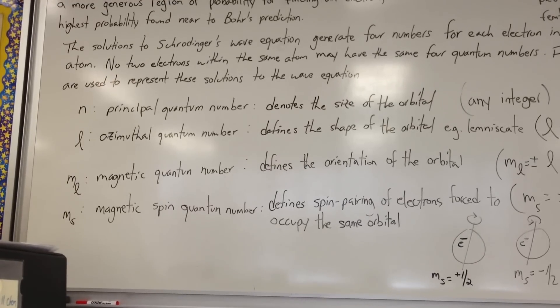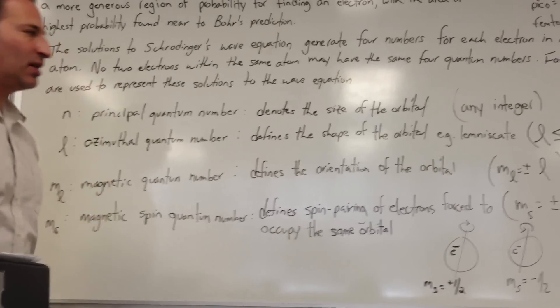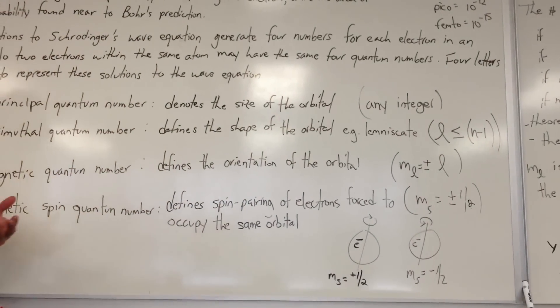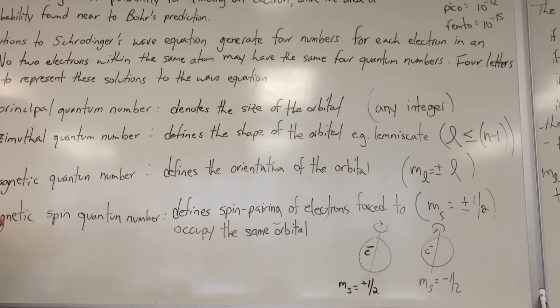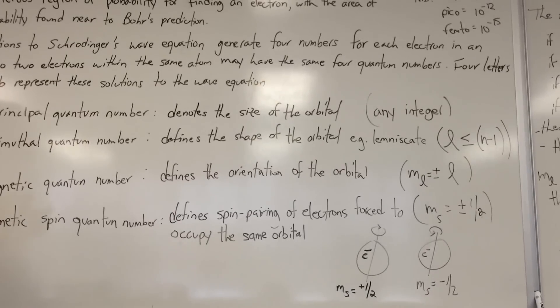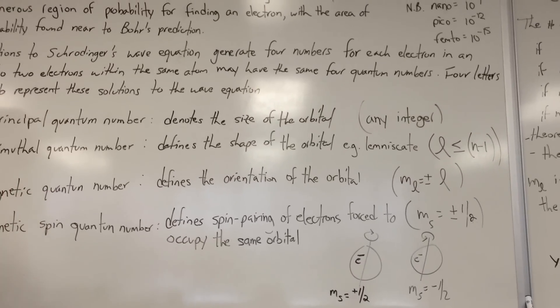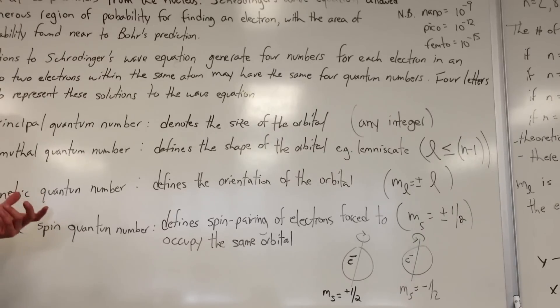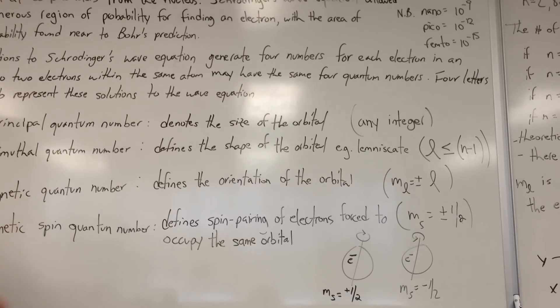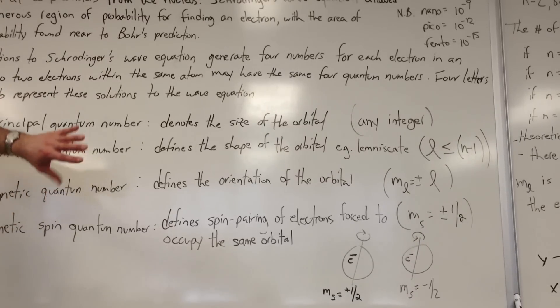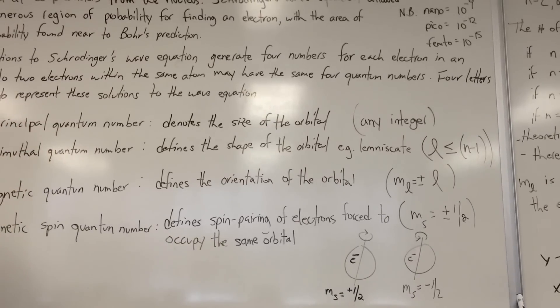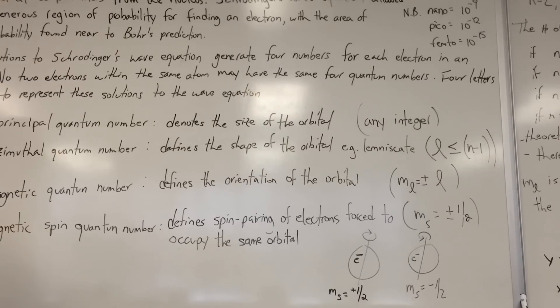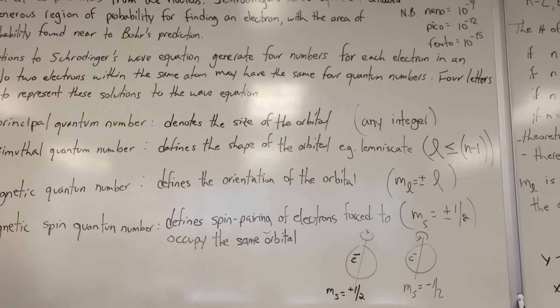L is the azimuthal quantum number and defines the shape of the orbital. Mathematical equations, for example, can define the shape of a curve like a parabola or hyperbola. In the case of electrons, they are very often either spherical or lemniscate in shape. They look like figure eights, but they're not flat figure eights, they're three-dimensional figure eights. The three variables have to be described when you describe a lemniscate that is three-dimensional, so it creates a dumbbell shape.